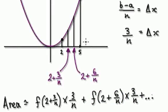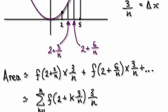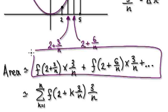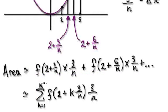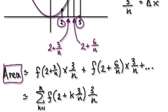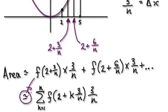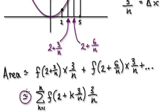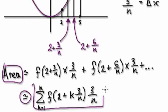Continuing with dot dot dot for all strips — this is for a general case with n number of strips. We can simplify the whole thing as a summation, where n is the number of strips. So the area between 2 and 5 is approximately this summation expression. It only becomes exactly equal when we take the limit as n tends to infinity; for now, it's approximately this.